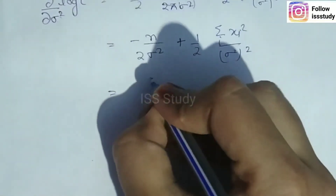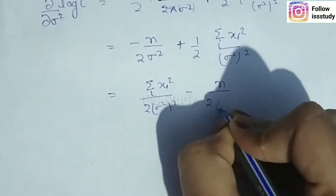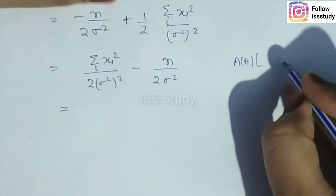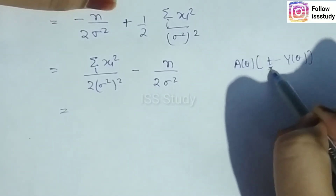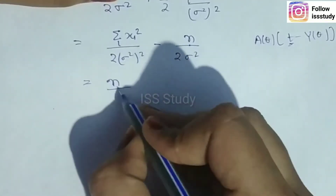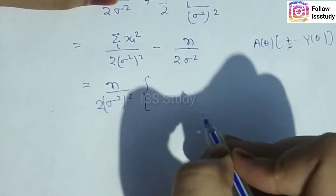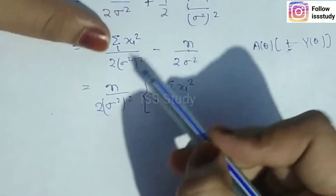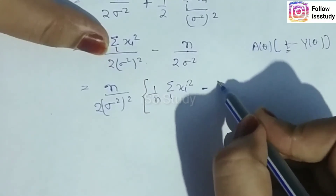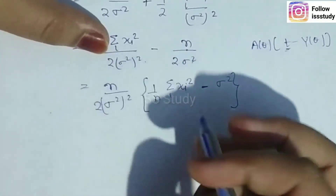Simplifying further, we factor to get the form: (1/σ⁴)[(1/n)Σxi² − σ²] · (n/(2σ²)). We identify the MVB form A(θ)[T − γ(θ)]. Here we can see what is common: taking out 1/σ⁴, the expression inside the bracket becomes (1/n)Σxi² − σ².